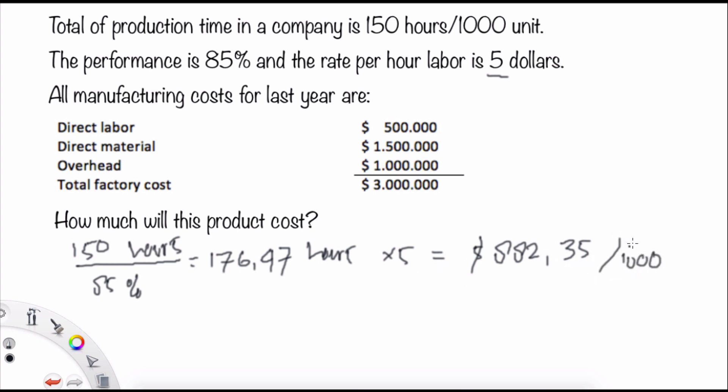So it will be $882.35 per thousand—sorry—so it will be $0.88 for each unit.